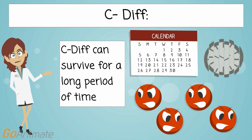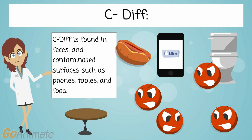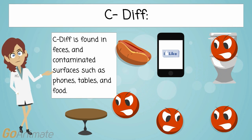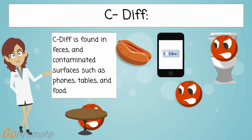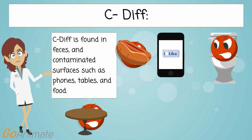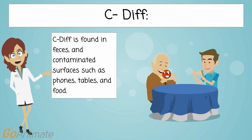C-diff can survive on surfaces for a long period of time. It is found in feces, and people can become infected when they touch contaminated surfaces — such as other people's hands, phones, tables, etc. — and then touch their mouth. Once people ingest the C-diff bacteria, the incubation time frame can be up to seven days.